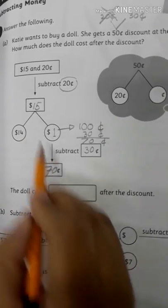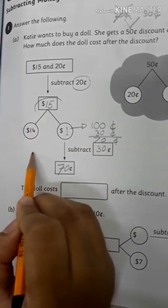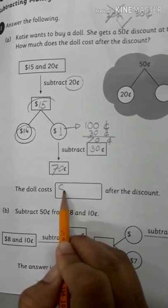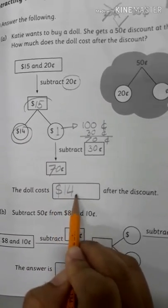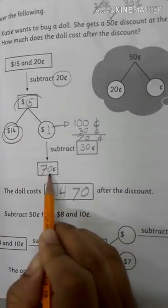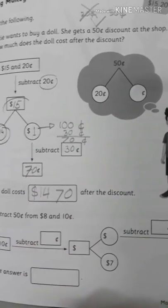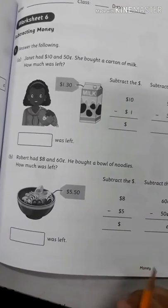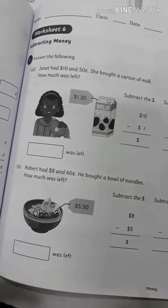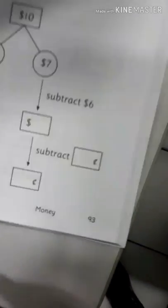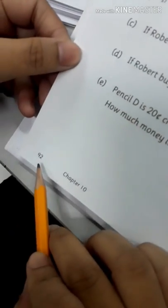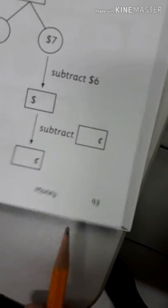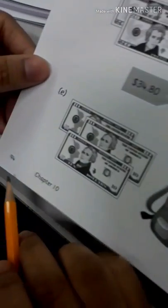So the doll costs $14.00 and 70 cents after the discount. After you know how to subtract money, I need you to answer your worksheet pages 89, 90, 91, 92, 93, and 94.